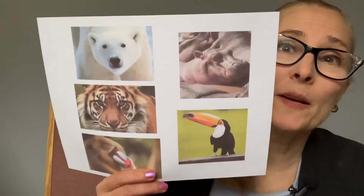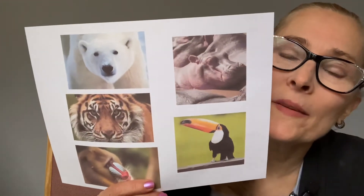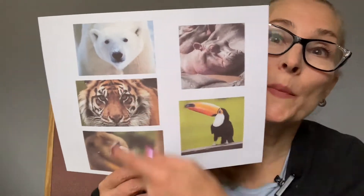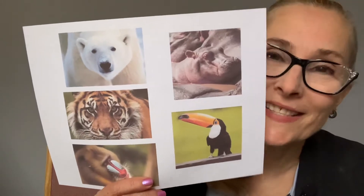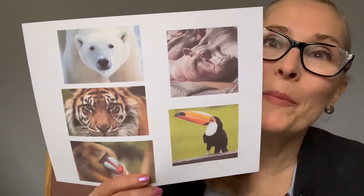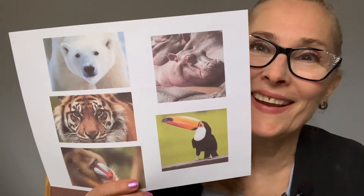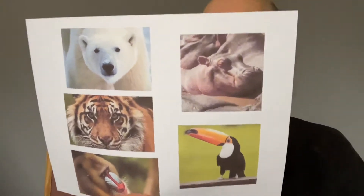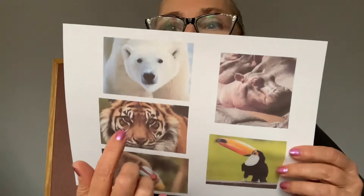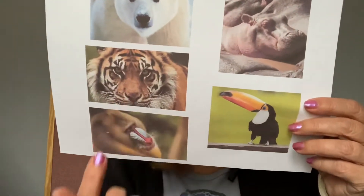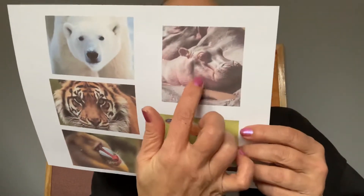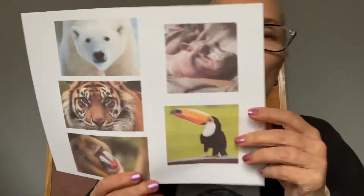We're going to sing a song today that I made up, called Whose Habitat Is That? We're going to talk about these animals because these are the animals in the book. Pay really close attention so you know by the end of the story who lives in which habitat. We have a polar bear, a tiger, a mandril monkey, a hippopotamus, and a toucan.